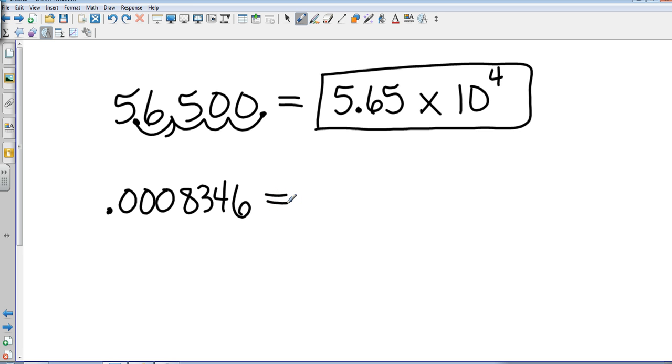Now I need to pick my number out of here that is going to be greater than 1 but less than 10. And that is 8.346. So from that decimal to my original decimal, that's 4 spaces to the left. So that's going to be 10 to the negative 4.